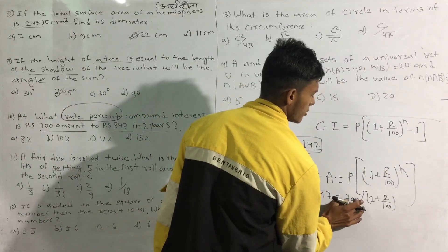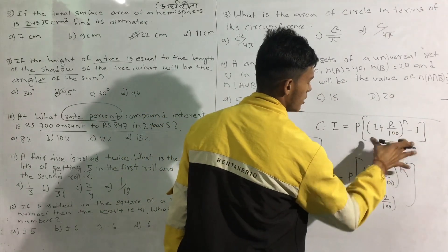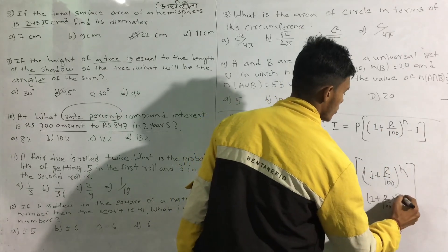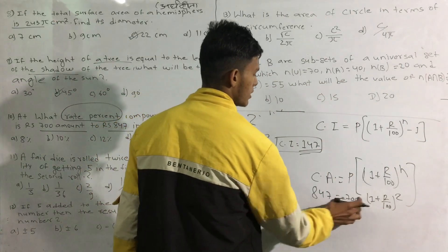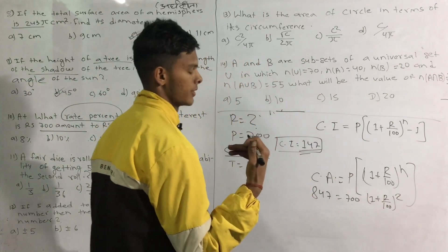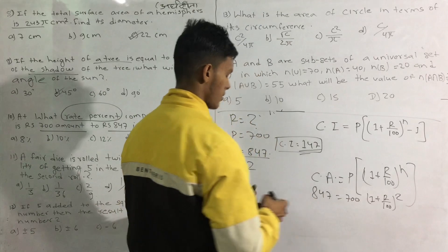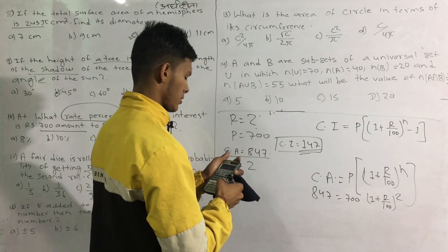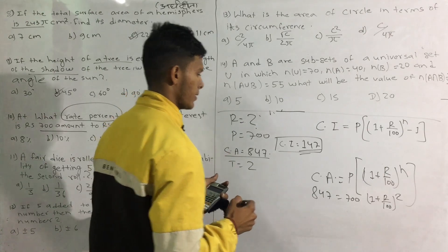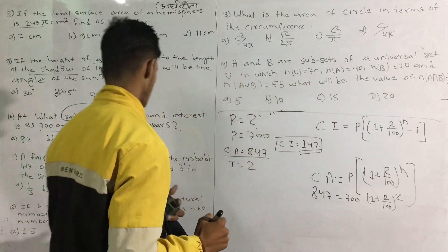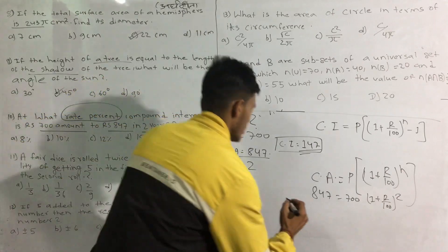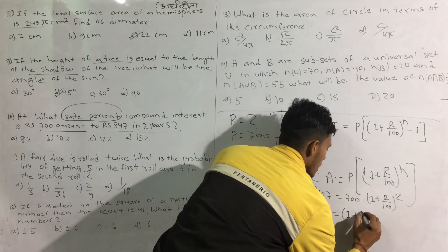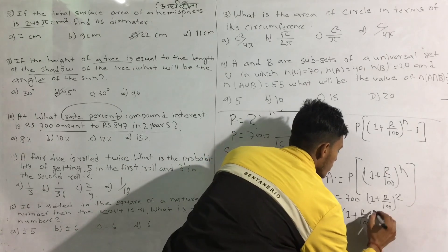They will be 70. The square for 2 years. Now we are going to divide this. 847 divided by 7.